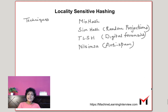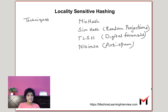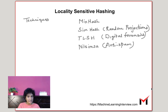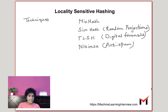There are several algorithms for implementing LSH. Some of the popular ones are the minhash algorithm and the simhash algorithm, which is based on random projections. There are others like TLSH, which is used for digital forensics and security, and nilsimsa, which is mostly for anti-spam. There are several others, some of which are open-sourced. But we will look at the random projections technique today.